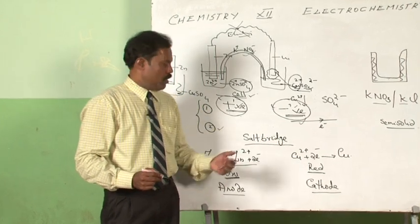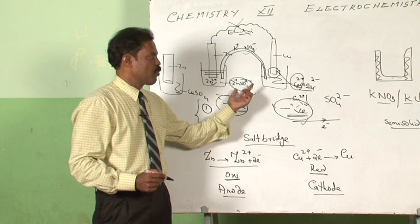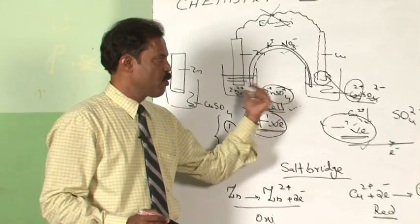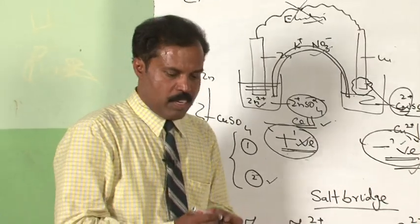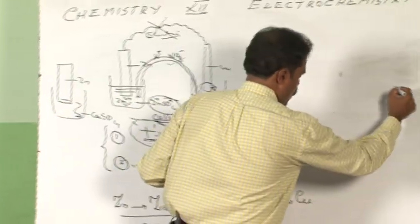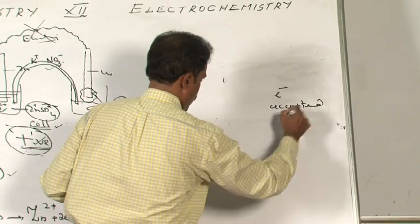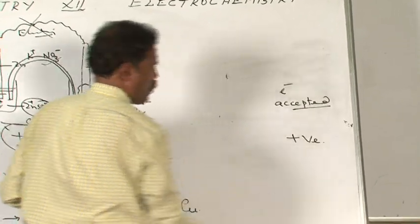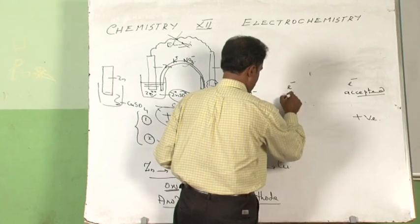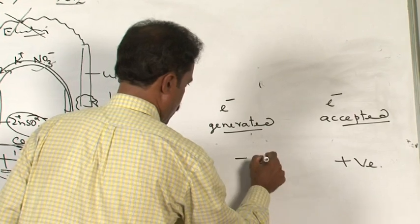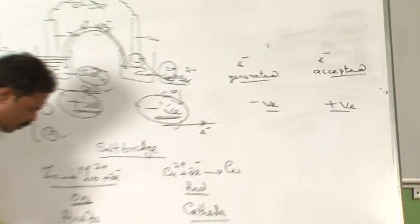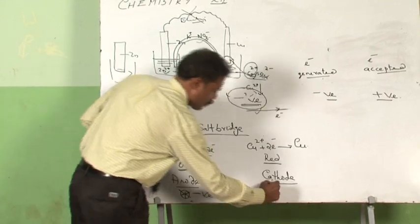By definition, the anode is the electrode where oxidation takes place and the cathode is the electrode where reduction takes place. Now, examining the charges: the electrode where electrons are accepted has to be positive, because negatively charged particles are being accepted there. The place where electrons are generated has to be negative. So the anode is negatively charged and the cathode is positively charged. Electricity is being produced by chemical changes, and that is why we call it an electrochemical cell.